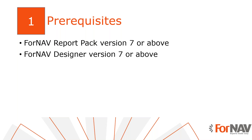Today I will work in the Business Central on-premise server with the Business Central 2022 Wave 2 release. I've installed the Universal Code version of the Fornav customizable report pack and I've executed the step-by-step wizard from the assisted setup to get started. Everything I do today is also available on the Business Central SaaS environment. I also have the Fornav Designer installed on my PC, which can be downloaded from the Fornav website. The functions to add item tracking are available in Fornav version 7 or above.